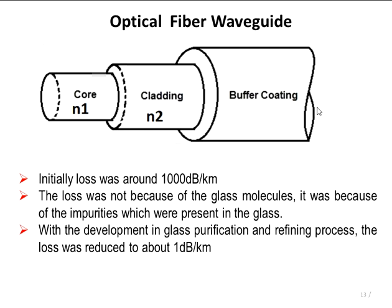This loss was not because of the glass material, but because of various impurities present in the glass. With advancements in glass purification and refining processes, the loss was minimized to about 1 dB per kilometer. Initially, 0.85 micrometer wavelength was used for transmission. Later, two more wavelengths were discovered: 1.3 micrometer and 1.55 micrometer. At these wavelengths, the loss was further reduced to about 0.2 dB per kilometer. This is the fiber structure.